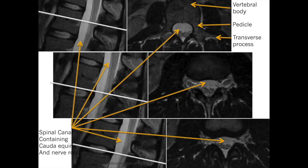To understand the impact of herniated disc, we need to revise the radiological anatomy of the vertebral body. On the left, you can see sagittal sequences with a line marking the level of axial slices seen on the right side, with arrows showing multiple structures.